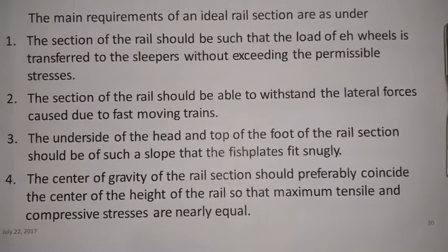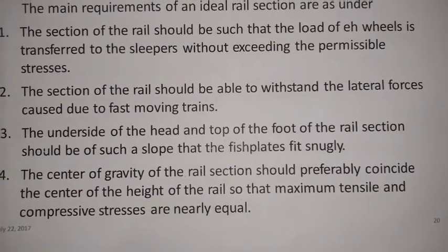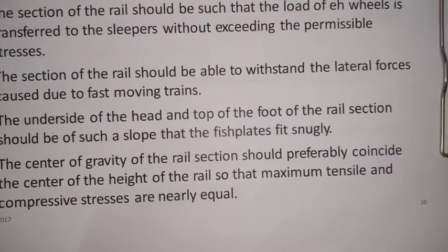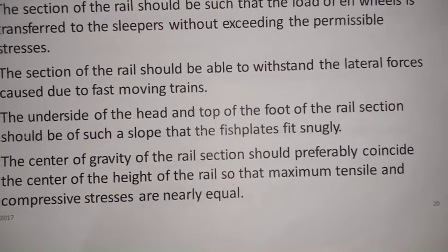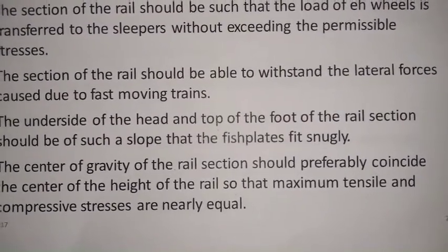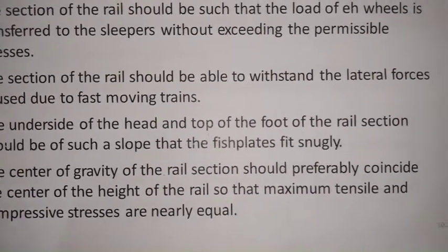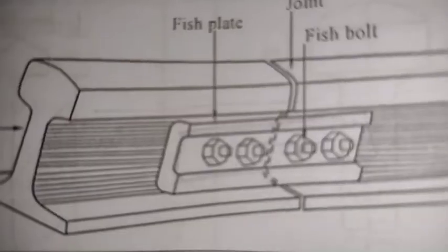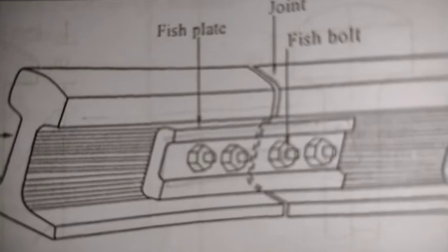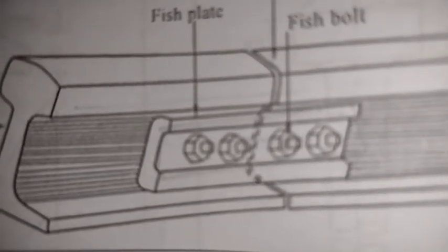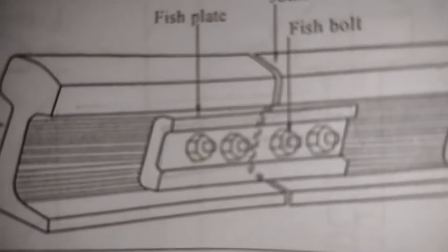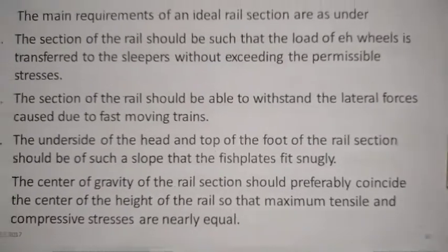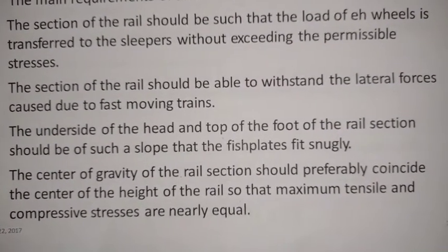Next, the underside of the head and top of the foot of the rail section should be of such a slope that the fish plates fit snugly. Fish plates are used at rail joints to maintain the continuity of rails and to provide a gap for expansion and contraction. A fish plate is provided at every rail joint, with two bolts on each side to connect one rail to another.